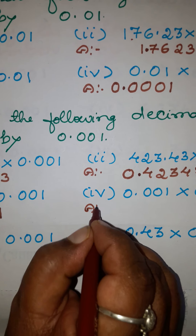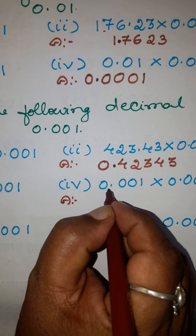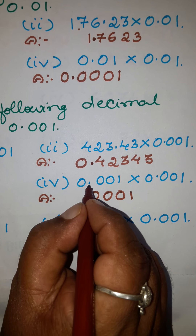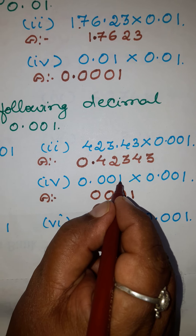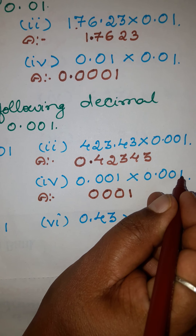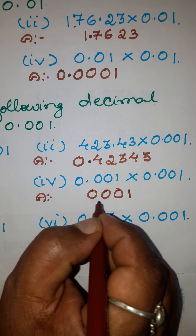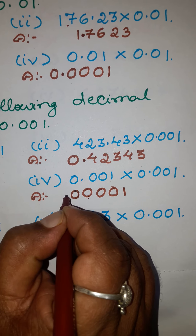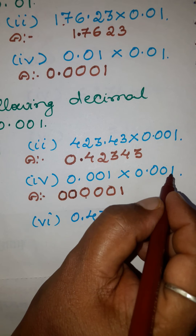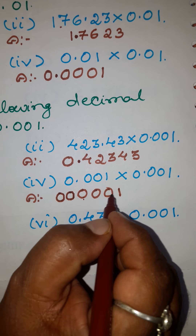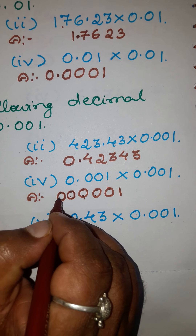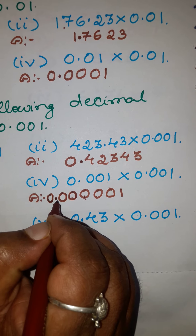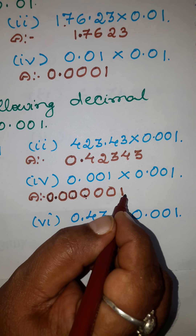Fourth example: write this number ignoring the decimal point as 00001. After the decimal there are three places; here also after the decimal there are three places. Three plus three is six. But there are only four digits here, so make a six-digit number by inserting two zeros. Move six places from right to left — one, two, three, four, five, six — put the decimal point, and it is customary to put a zero here. The answer is 0.000001.